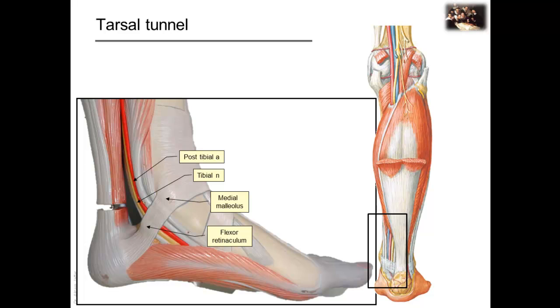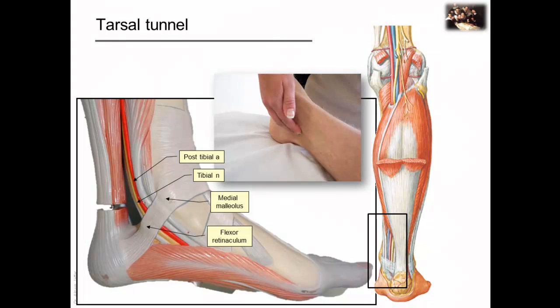A retinaculum is a thickening of deep fascia that anchors the long muscle tendons and prevents their bow-stringing during contraction. At the medial side of the ankle joint, the bony prominence is part of the tibia, and it's called the medial malleolus. It is behind this bony prominence that the pulsation of a peripheral artery can be felt, and that is the posterior tibial artery.